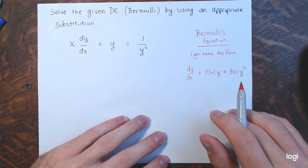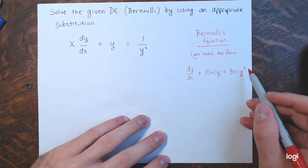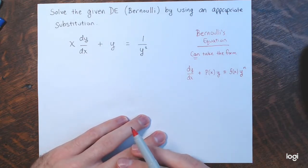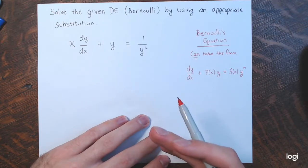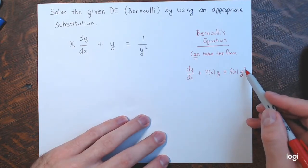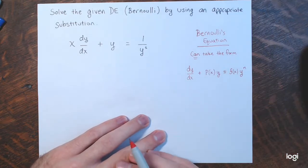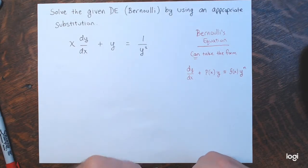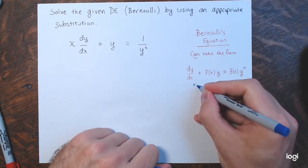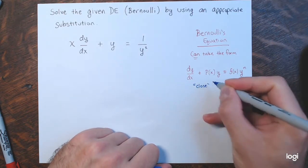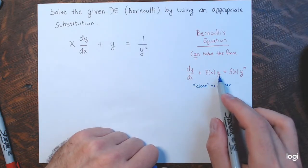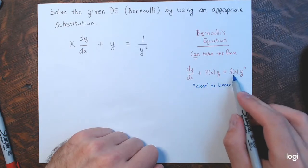Unless it's y to the first power, in which case it would still be linear. But y to any other power — any power but zero or one — makes this a nonlinear equation. You can see how it's very close to the standard linear form; it starts exactly the same way except for this y to the nth. So, what happens when I divide by y to the nth?